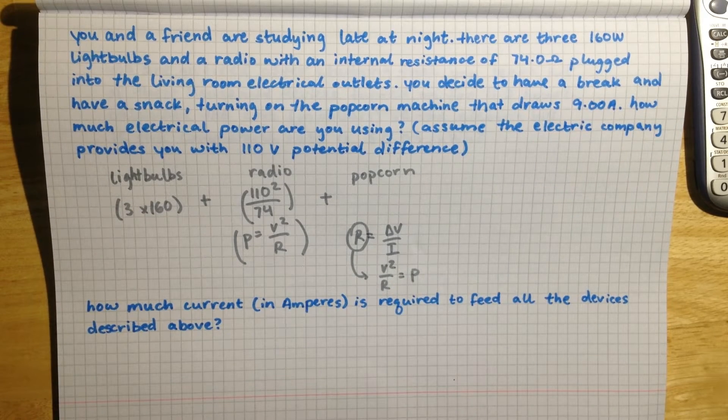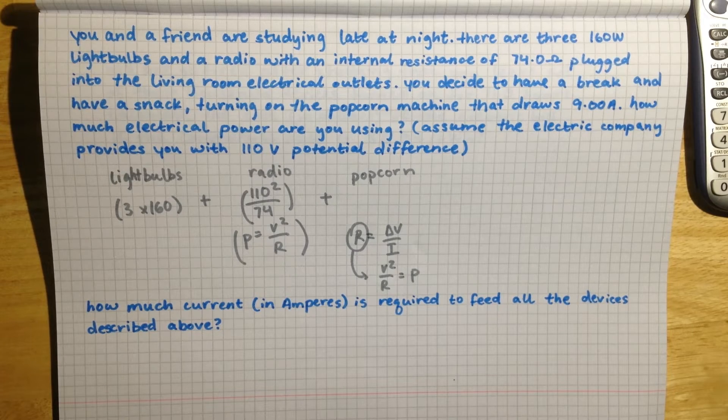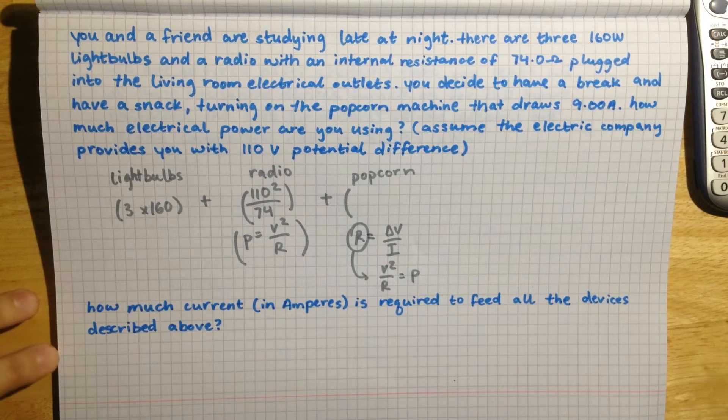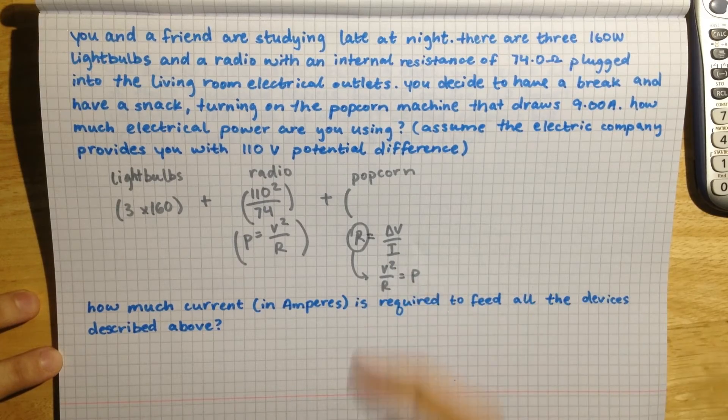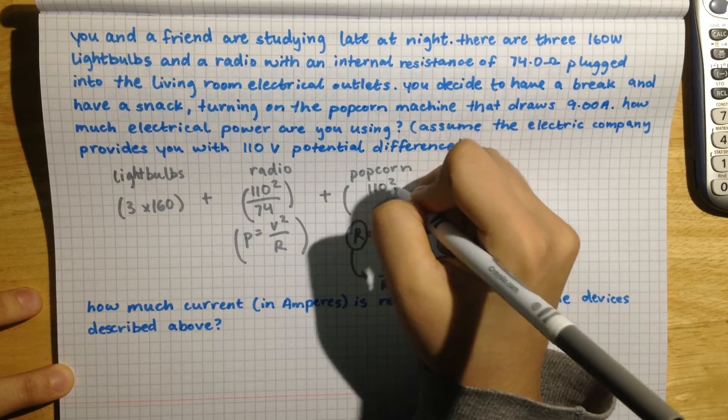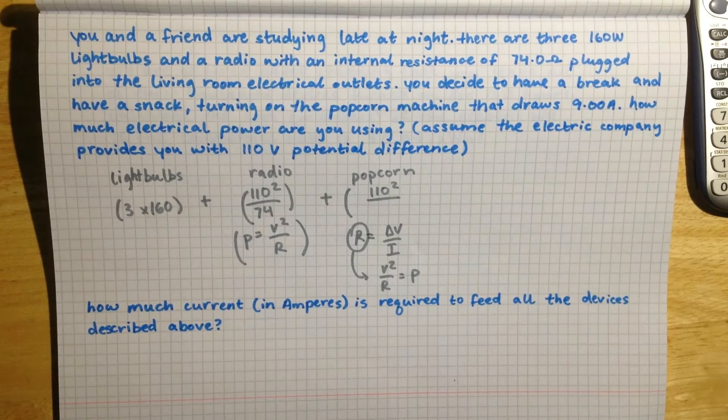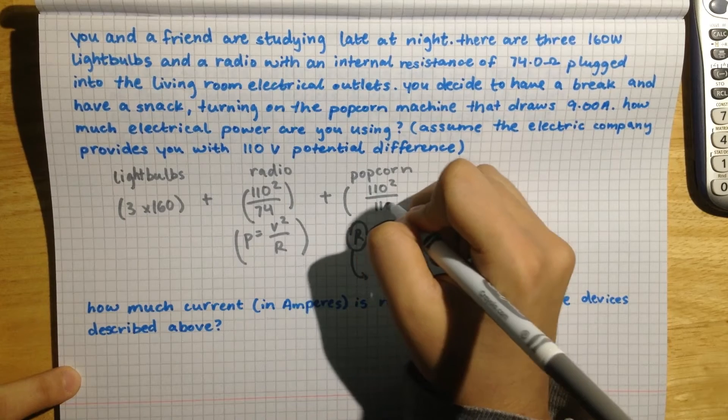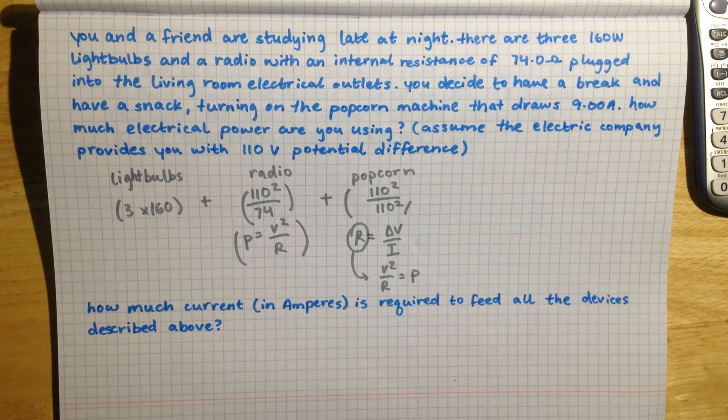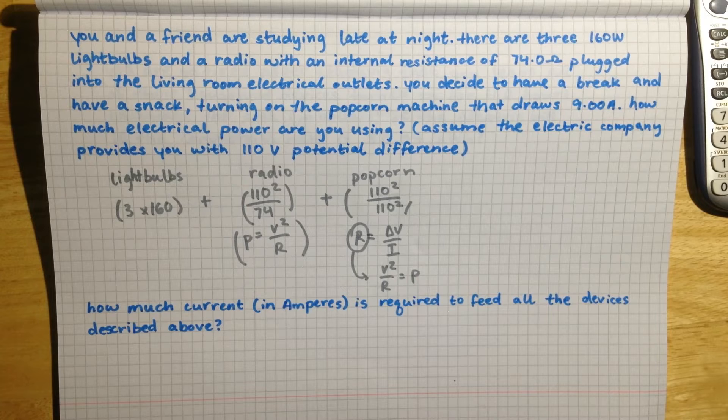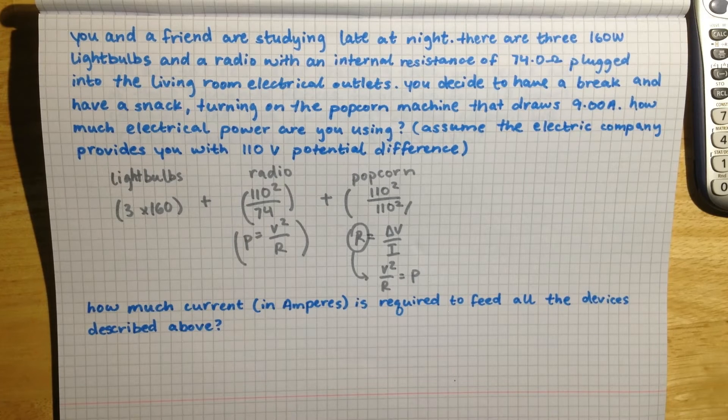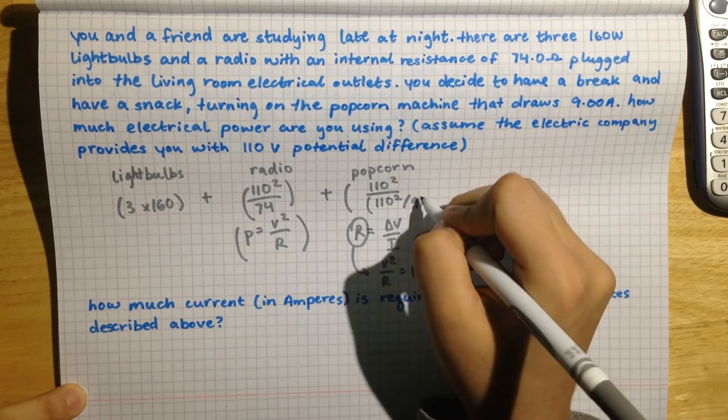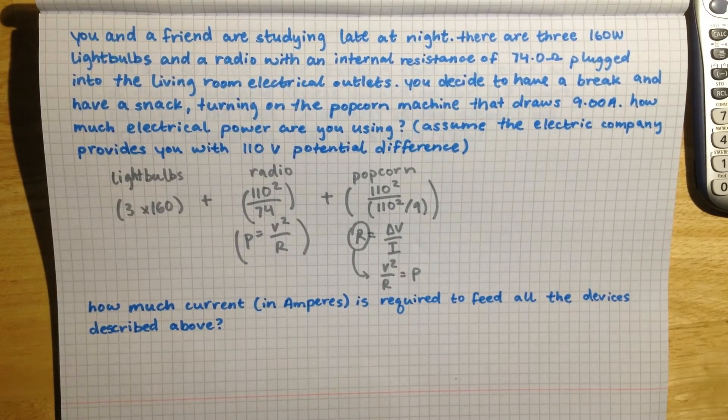So we are just going to combine that into one little calculation that we can put into the calculator. So V squared, that is 110 squared again, divided by V over I. So 110 divided by the 9 amps that they have provided us with that the popcorn machine takes up. So just 9, and that is a separate fraction in the denominator.